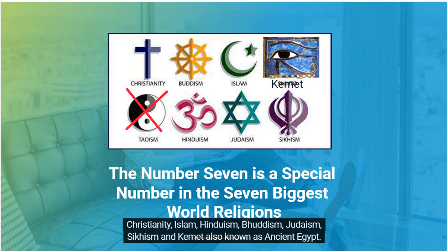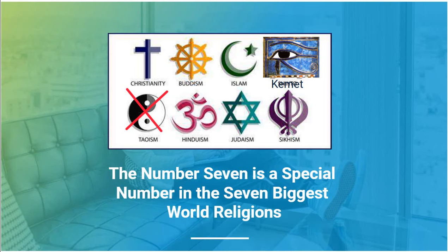These seven religions are: Christianity, Islam, Hinduism, Buddhism, Judaism, Sikhism, and Kemet, also known as ancient Egypt.